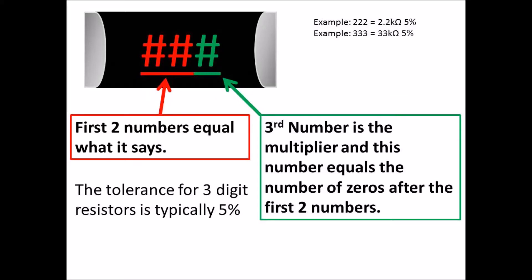All right, so we're going to talk about surface mount devices. We're going to start with the resistor. If you have one that has three digits, it's going to be typically a 5% tolerance resistor, and the first two digits are going to be exactly what they say.